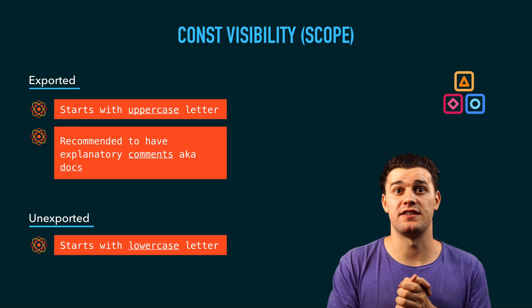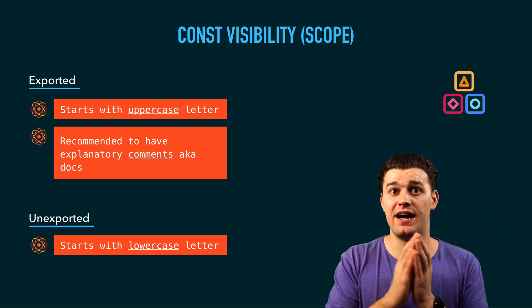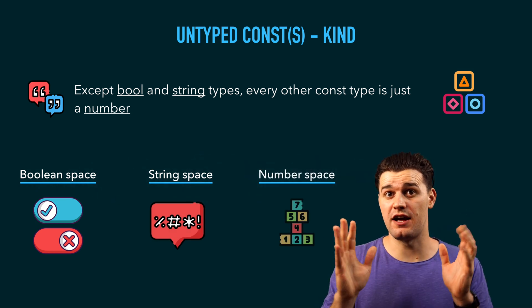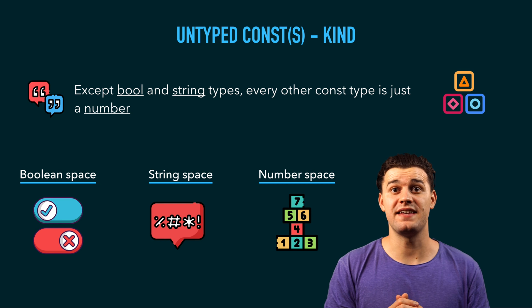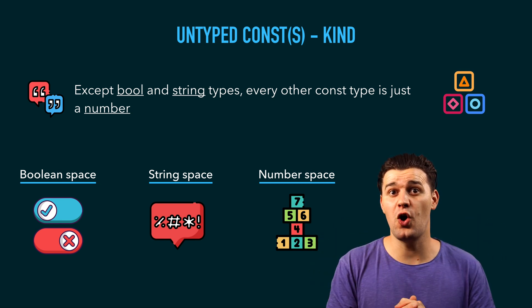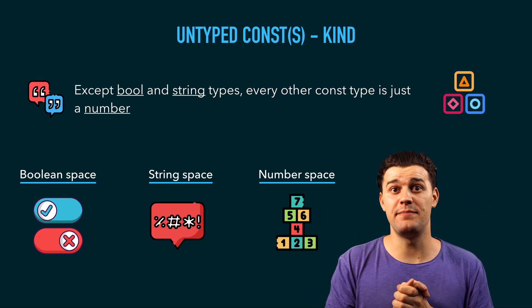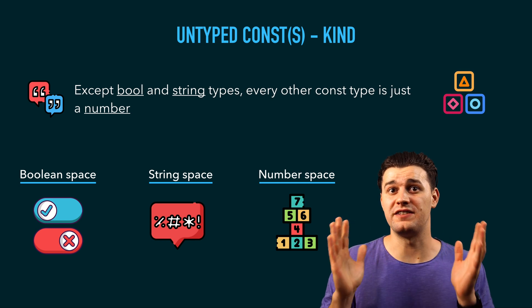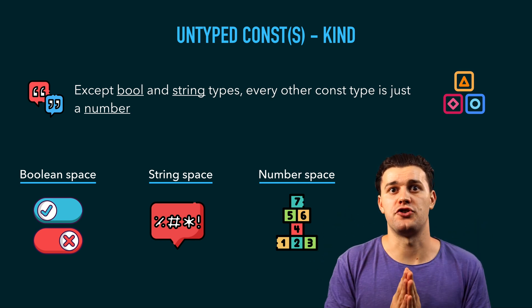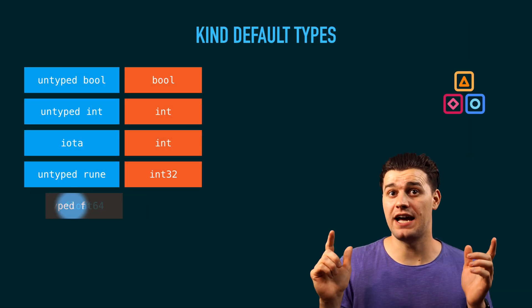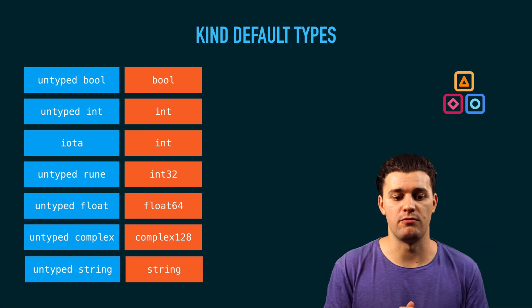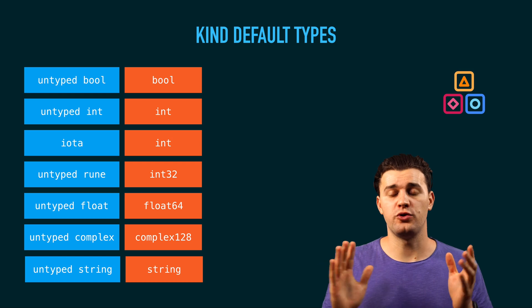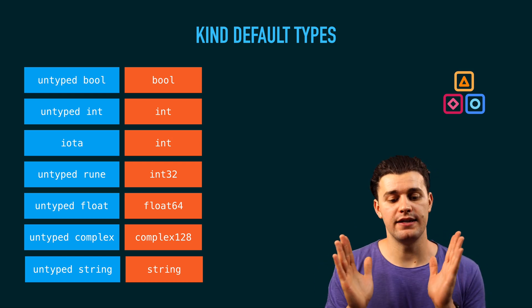We talked earlier about typed and untyped constants in Go. Typed means it has a type; untyped means it doesn't. In Go, except for bool and string types, pretty much every other const is just a number — we have the boolean space, the string space, and the number space. Even though Go allows untyped constants — meaning those constants don't have a type at the time the compiler evaluates that code — Go is a typed language and behind the scenes assigns a default type to each untyped const. For a bool you get bool, for int you get int, for iota you get int, for rune you get int32, for float you get float64, for complex you get complex128, and for string you get string.